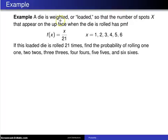A die is weighted or loaded so that the number of spots x that appear on the up face when the die is rolled has probability mass function f(x) equals x over 21 for x equals 1 through 6.